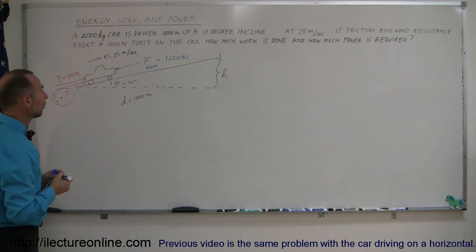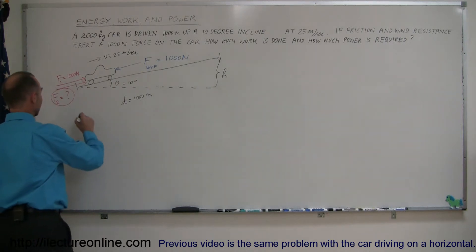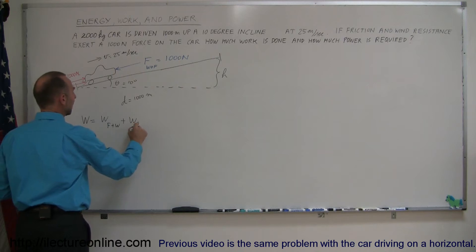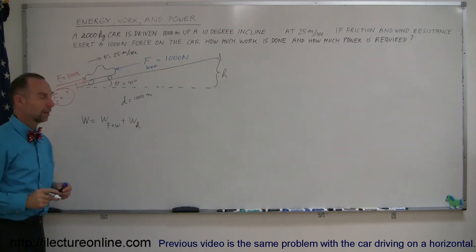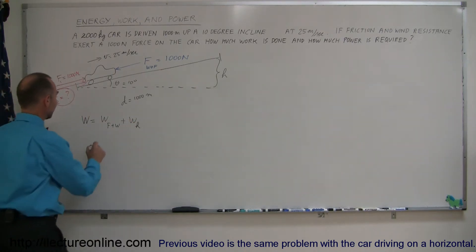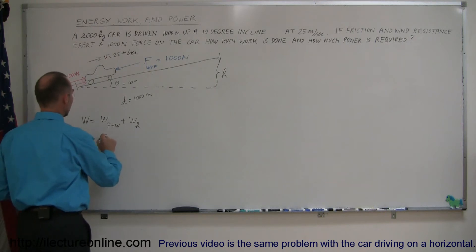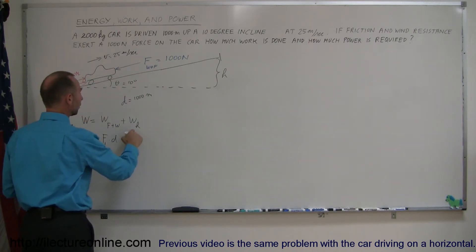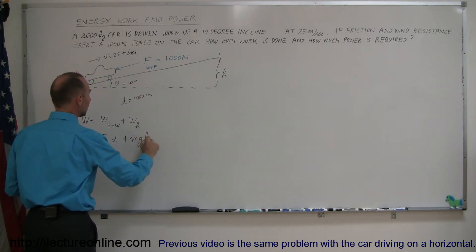So, the work done is equal to the work done to overcome friction and wind resistance plus the work done to overcome the height, H. We can say this is equal to force times distance, and this is force 1, the force required to overcome the wind resistance and the friction, plus the work done to gain the height, which would be the potential energy gain, which is MGH.